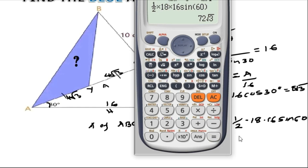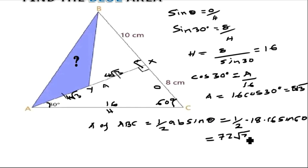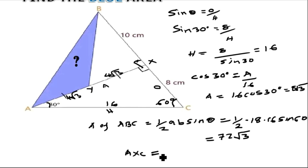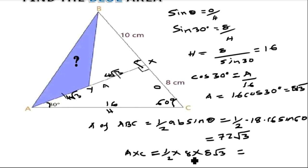That gives us an area of 72√3 for triangle ABC. To find the blue area, we subtract the two smaller triangles — triangle AXC and triangle BXY — from triangle ABC. The area of triangle AXC is a right-angled triangle, so it is ½ × base × height = ½ × 8 × 8√3 = 32√3.